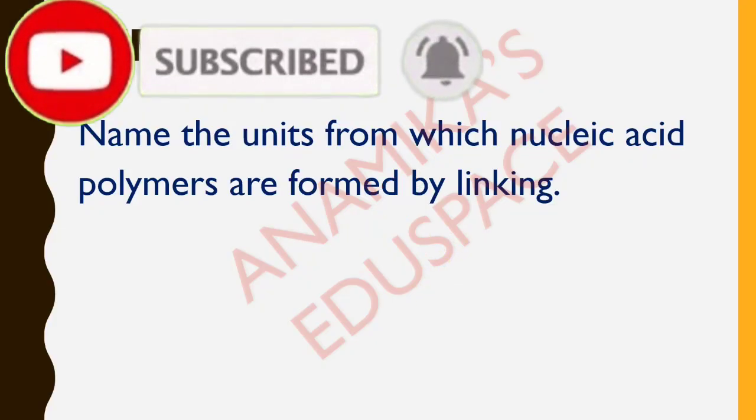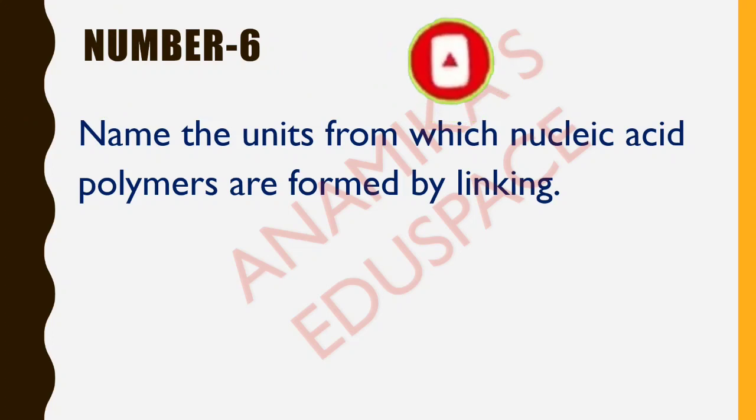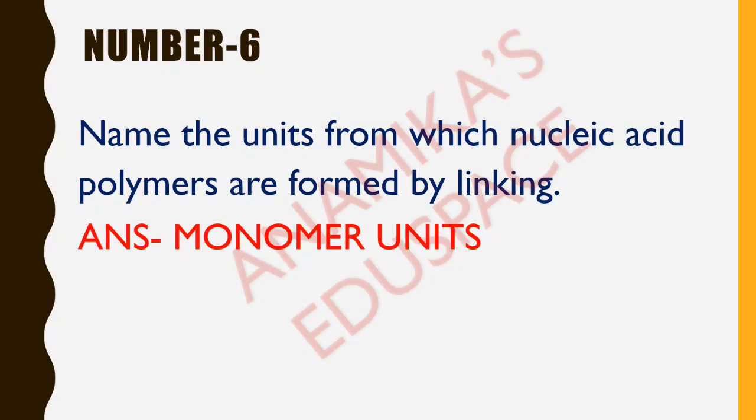Number six: name the units from which nucleic acid polymers are formed by linking. The answer is monomer units.